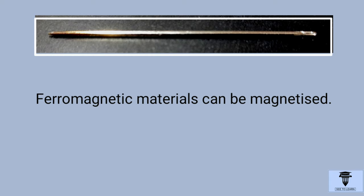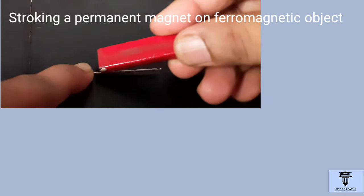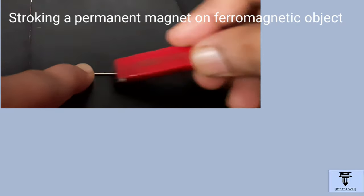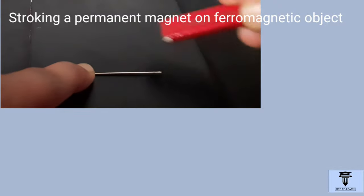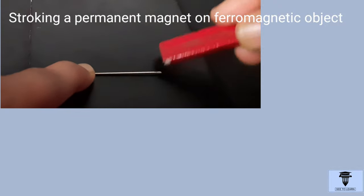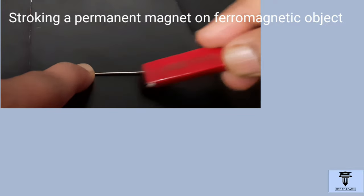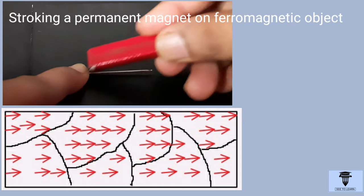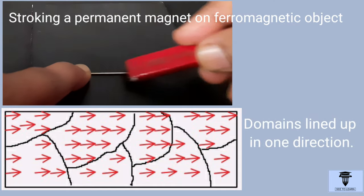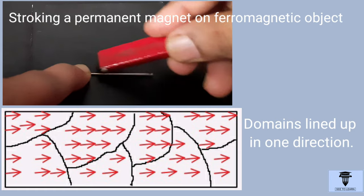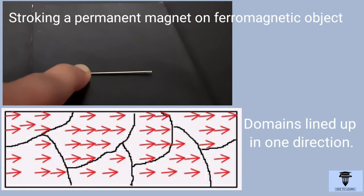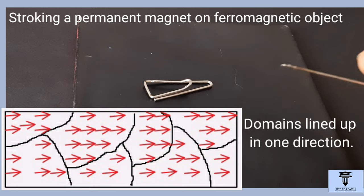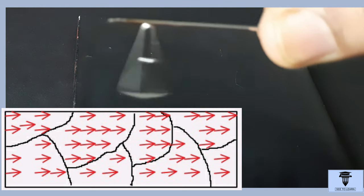But such ferromagnetic materials can be magnetized. How? The simplest method is by stroking a permanent magnet on the ferromagnetic object in one direction. As I am doing on the needle. This will align all the tiny atomic magnets of the needle in one direction. In other words, this will align all the domains of the needle. And when this happens, the object gets magnetized and behaves as a magnet. See, now this needle attracts the pin.